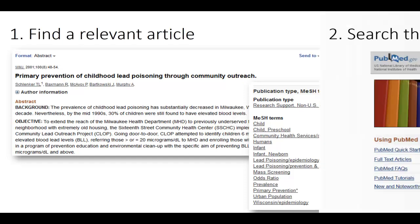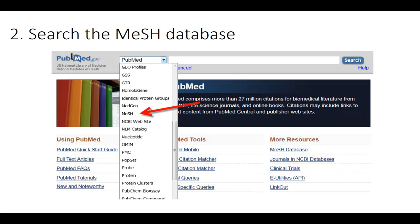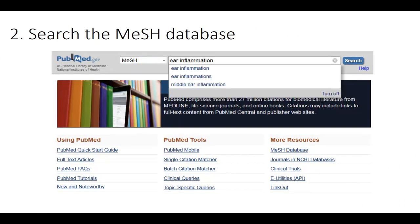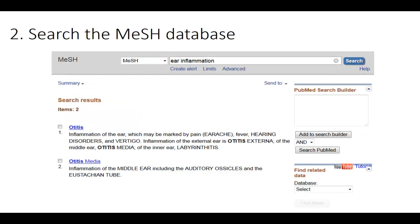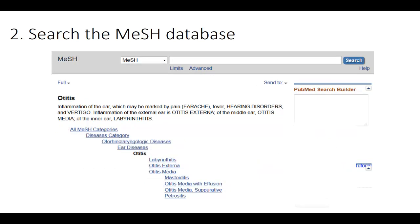You can also search the MeSH database directly. Switch from PubMed to MeSH and search for your terms. When you search within the MeSH database, you can see the MeSH records, which include a definition of the term and show the hierarchy.